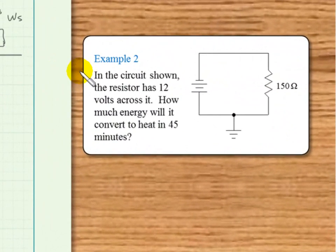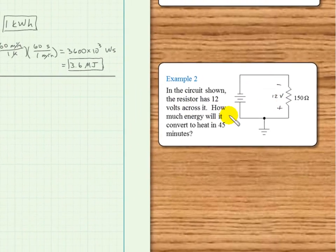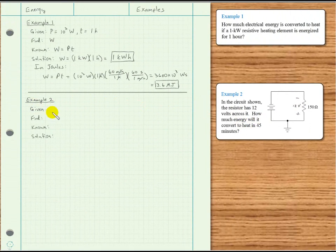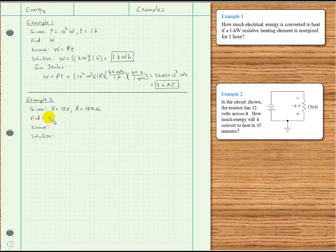In the circuit shown, the resistor has 12 volts across it. How much energy will it convert to heat in 45 minutes? We have 12 volts with this polarity — it gets its polarity from the battery. We are given voltage equals 12 volts, resistor R equals 150 ohms, and time equals 45 minutes. We're asked to find energy W, and we know W equals power times time.